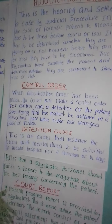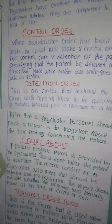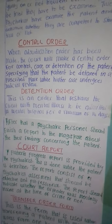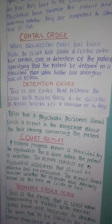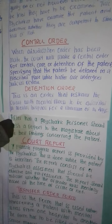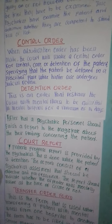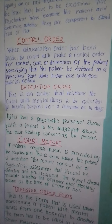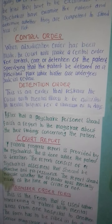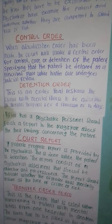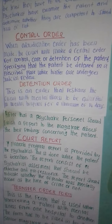Then we have a control order. When an adjudication order has been made, a control order is made for the control, care, or detention of the patient, specifying that the patient be detained in a prescribed place while his or her case is under judicial review.